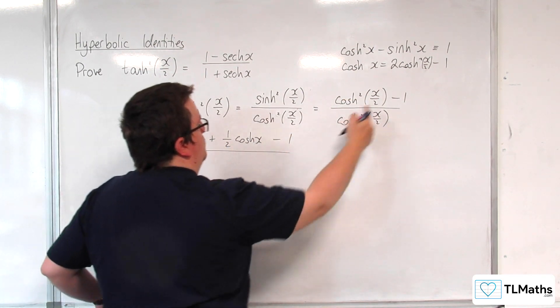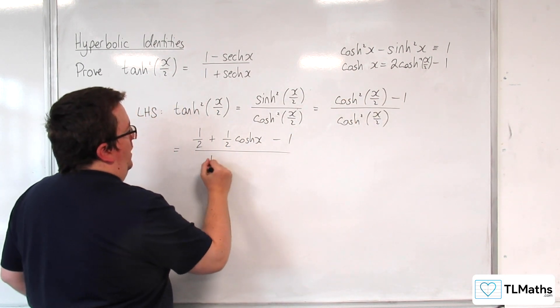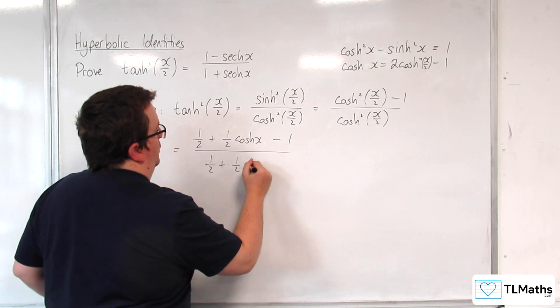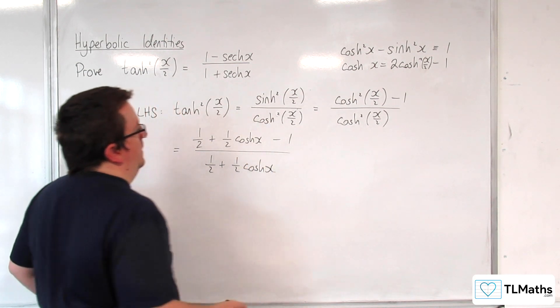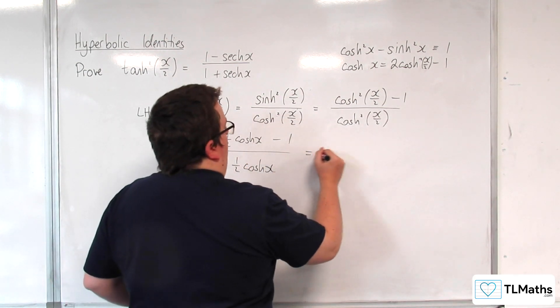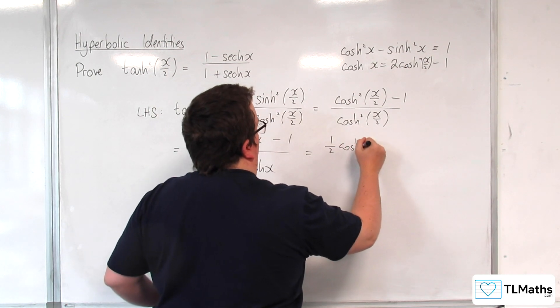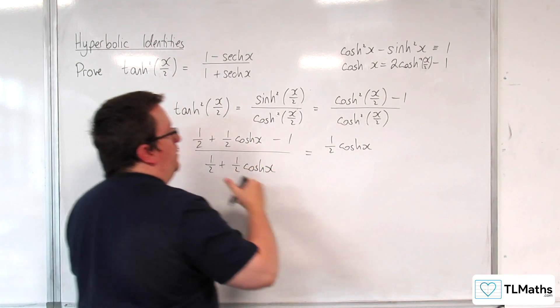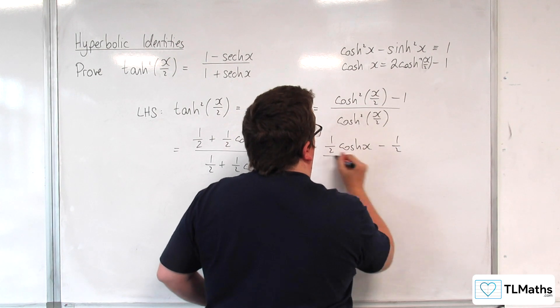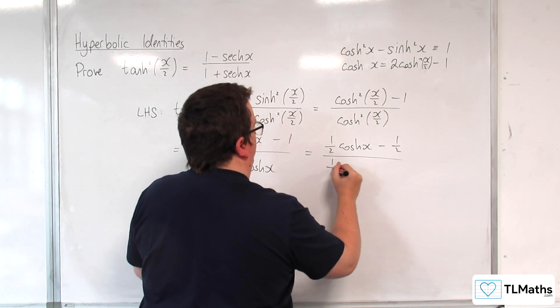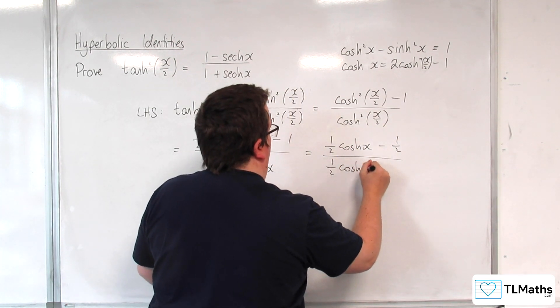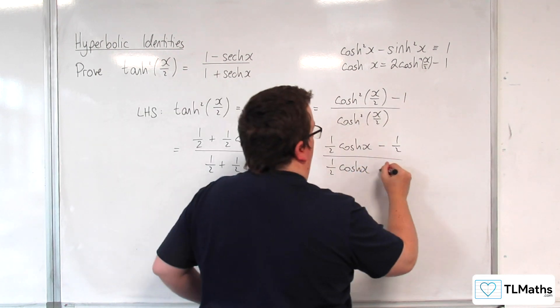We've still got the take away 1 on the numerator, and we've got 1 half plus 1 half cosh x. So, we have 1 half cosh x. 1 half take away 1 is take away a half, and we've got 1 half cosh x plus a half there.